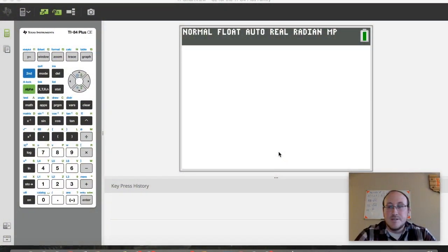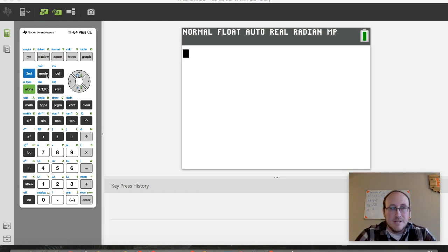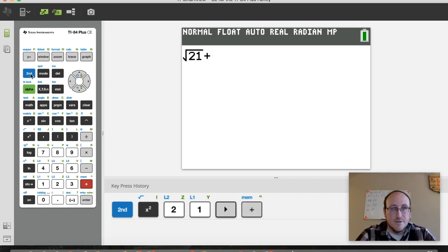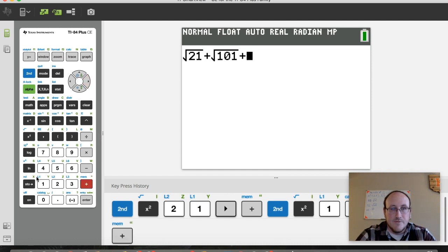Now that I've found the exact distance of each of the sides of this triangle, I'm going to go ahead and go to my calculator to compute them. I had to compute the perimeter. I had the square root of 21 plus the square root of 101. And then finally, the last one was 144, which is 12.